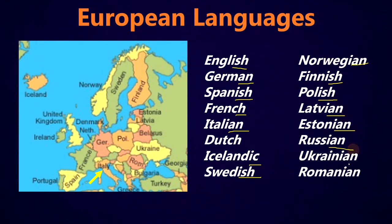Now, not every language will use these suffixes. For example, Dutch is not using one of these suffixes. And there are some other languages in the world that don't use these common suffixes, but you can see that these ones get used quite a bit. Now the CH in French is related to the ISH, like in Spanish or English.